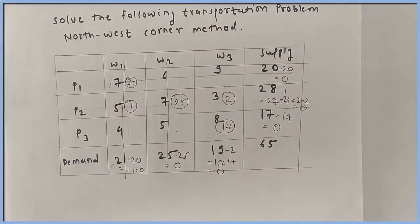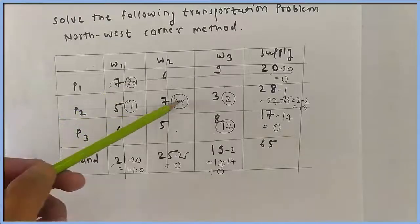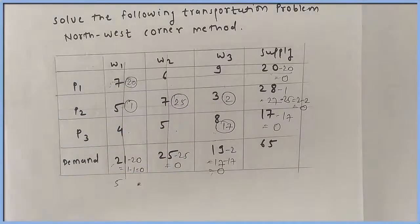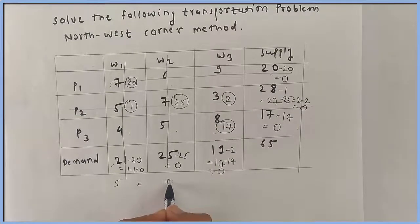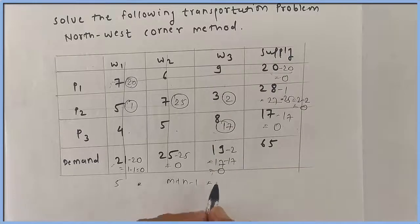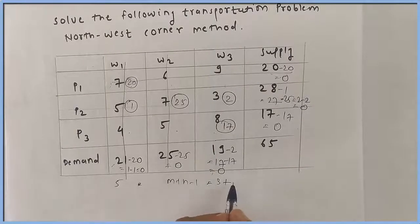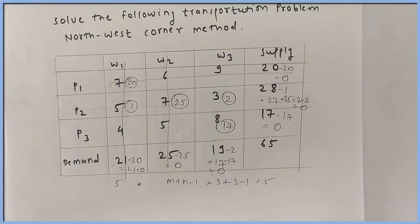Now calculate the number of allocations, which is 1, 2, 3, 4, and 5 — so the number of allocations equals 5. We check whether number of allocations equals m plus n minus 1. Here m equals number of rows equals 3, and n equals number of columns equals 3, so m plus n minus 1 equals 5. The number of allocations matches, therefore the solution is feasible.